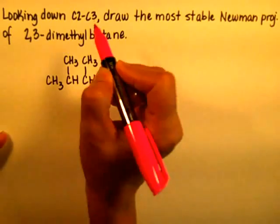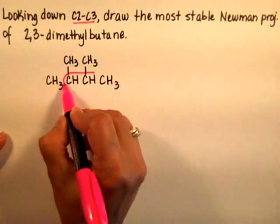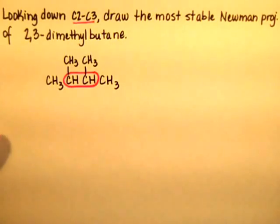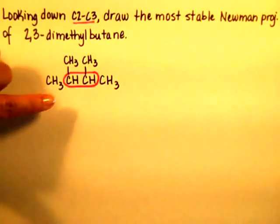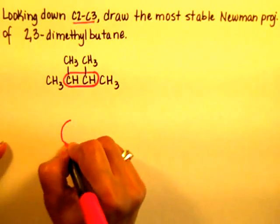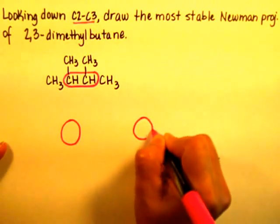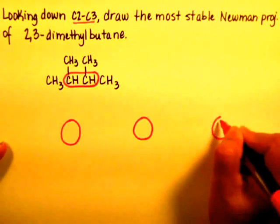So the first thing that I'm going to do, they tell me to look down carbons 2 and 3. So I'm going to put carbons 2 and 3 in a circle. That's what's going to represent the circle of my Newman projection. So I'm going to go ahead and I'm going to do 3 circles for the Newman projections.